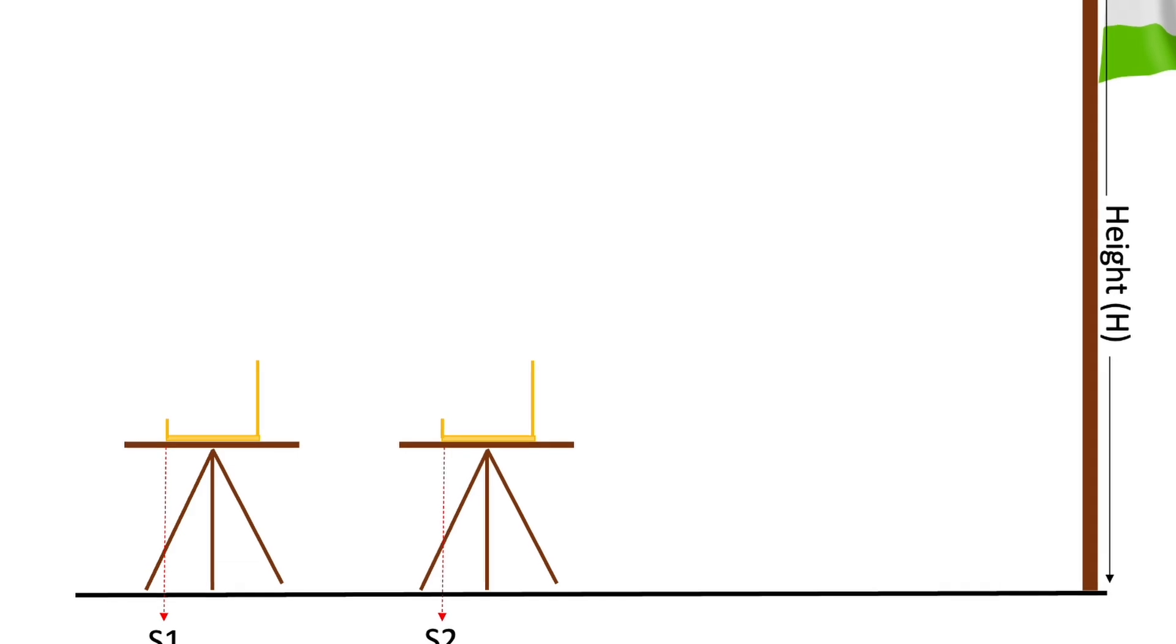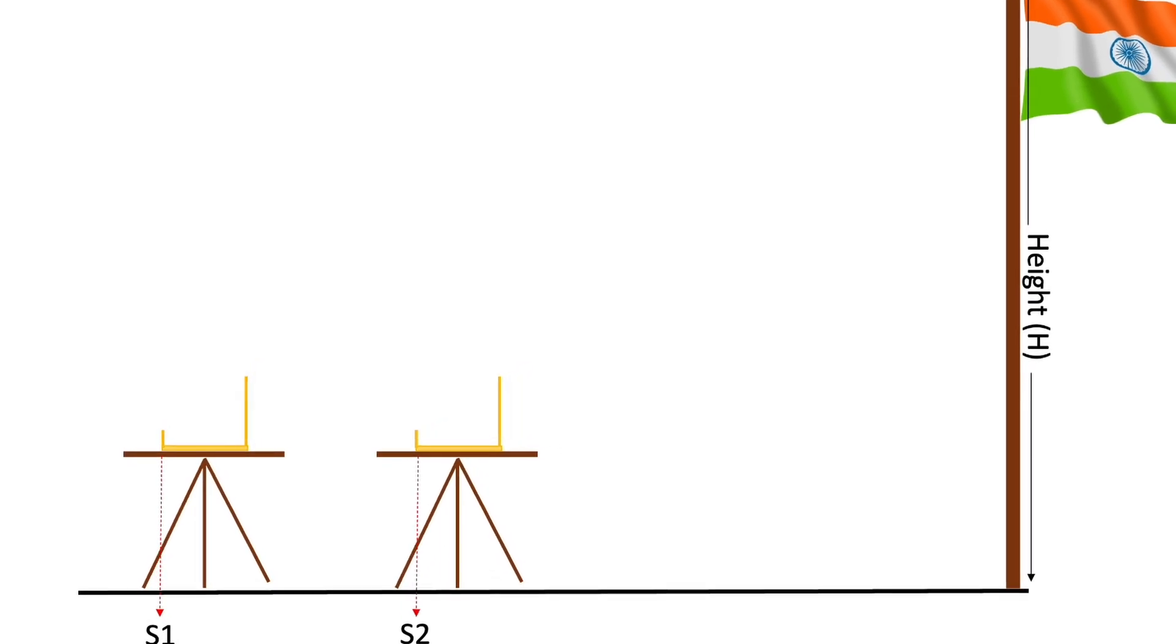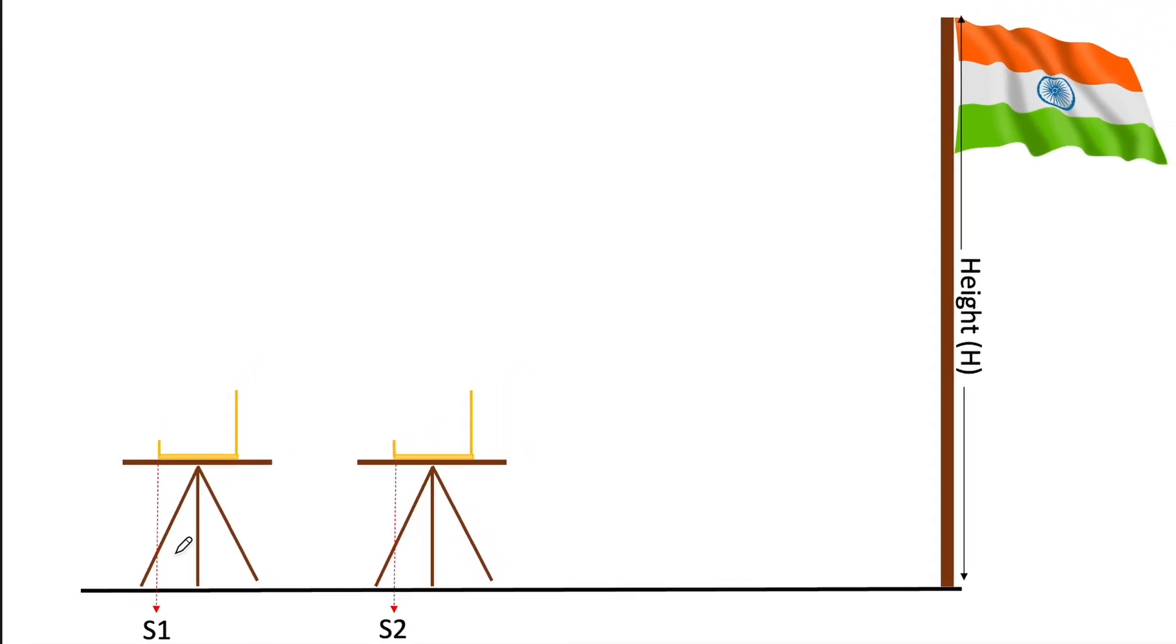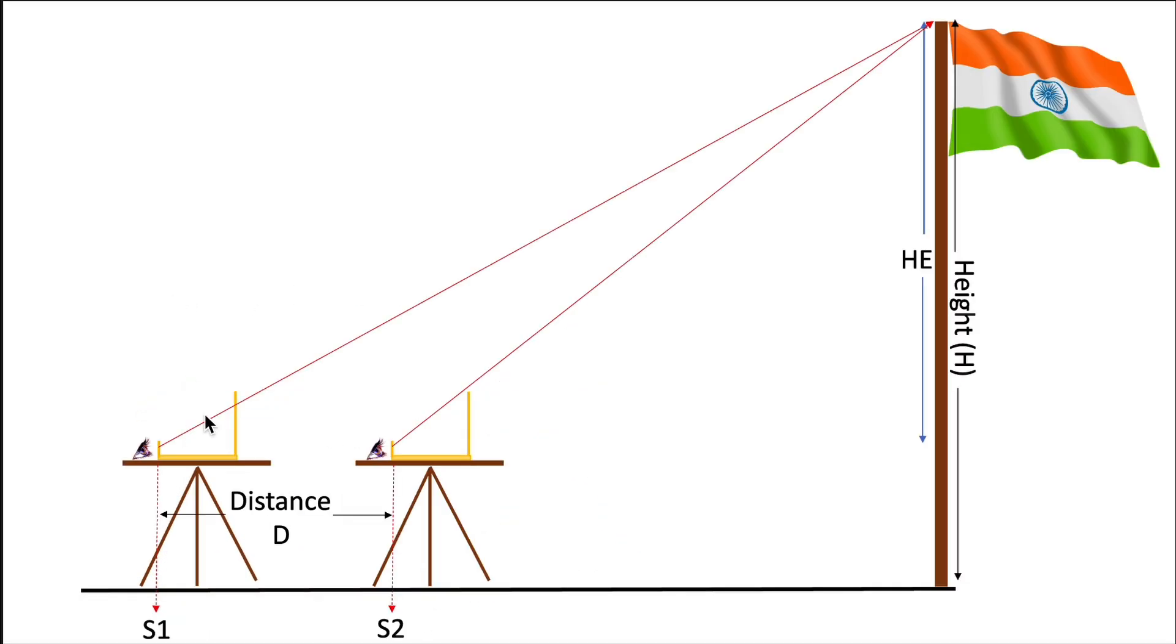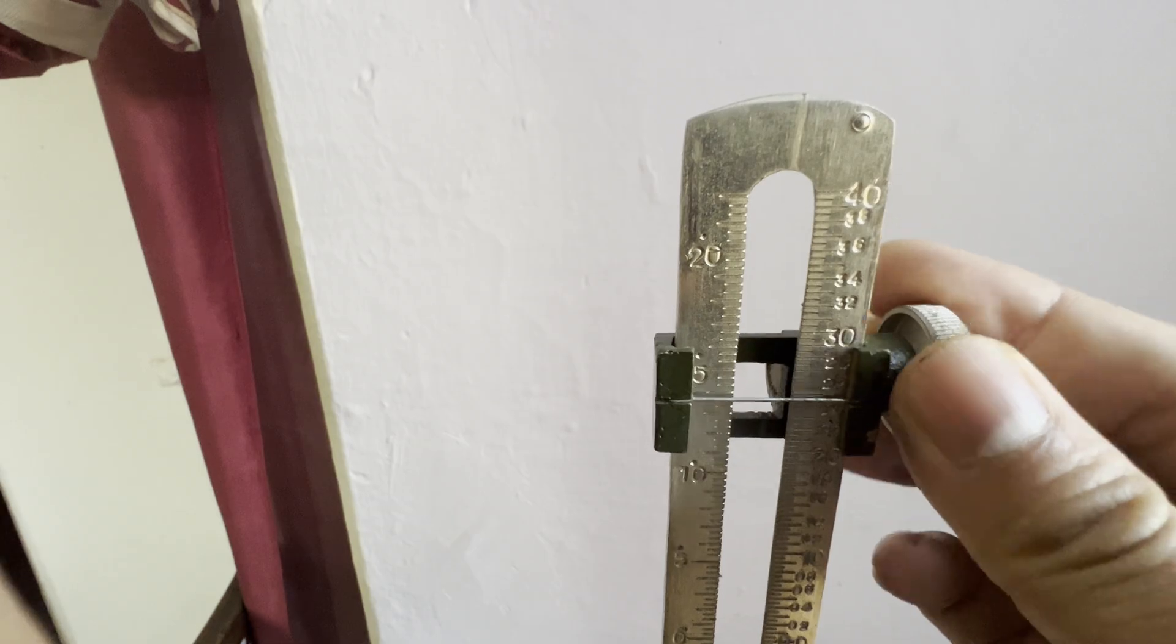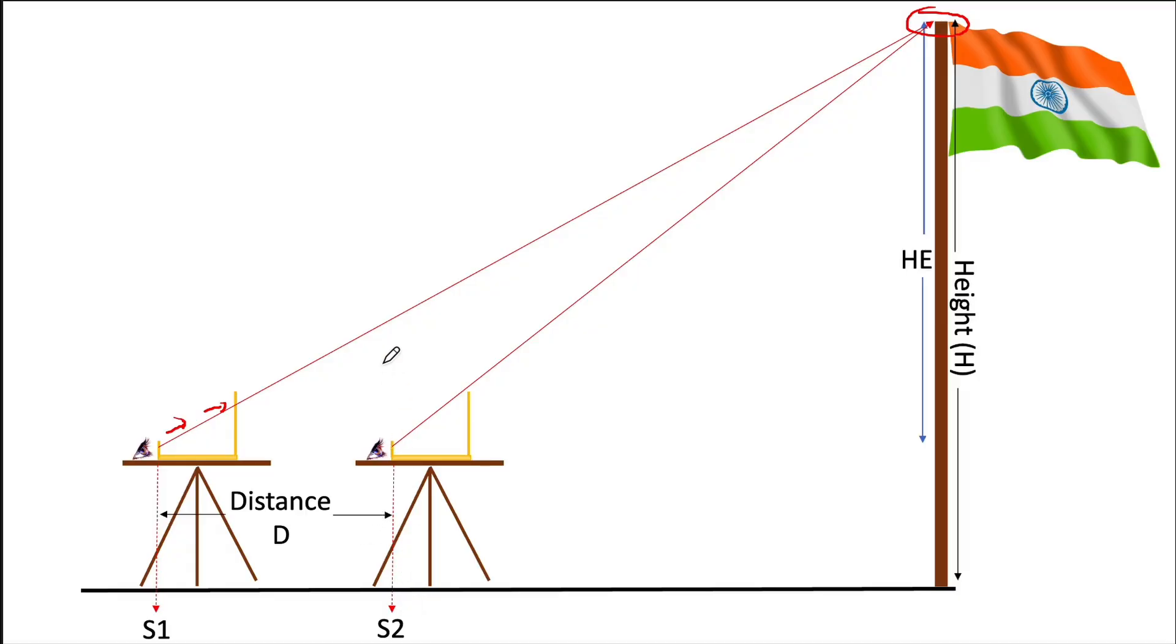Once we have set up the table twice, or one table at two points, we can measure the distance between S1 and S2. We look through the eyehole and view the crosshair and object from both S1 and S2.